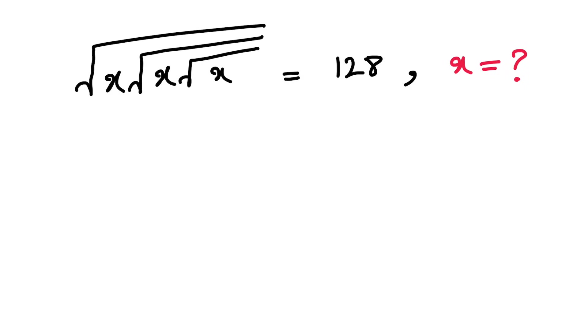Hey guys, this is going to be an interesting one. We have the square root of x times the square root of x times the square root of x is equal to 128, and we have to figure out the value of x.